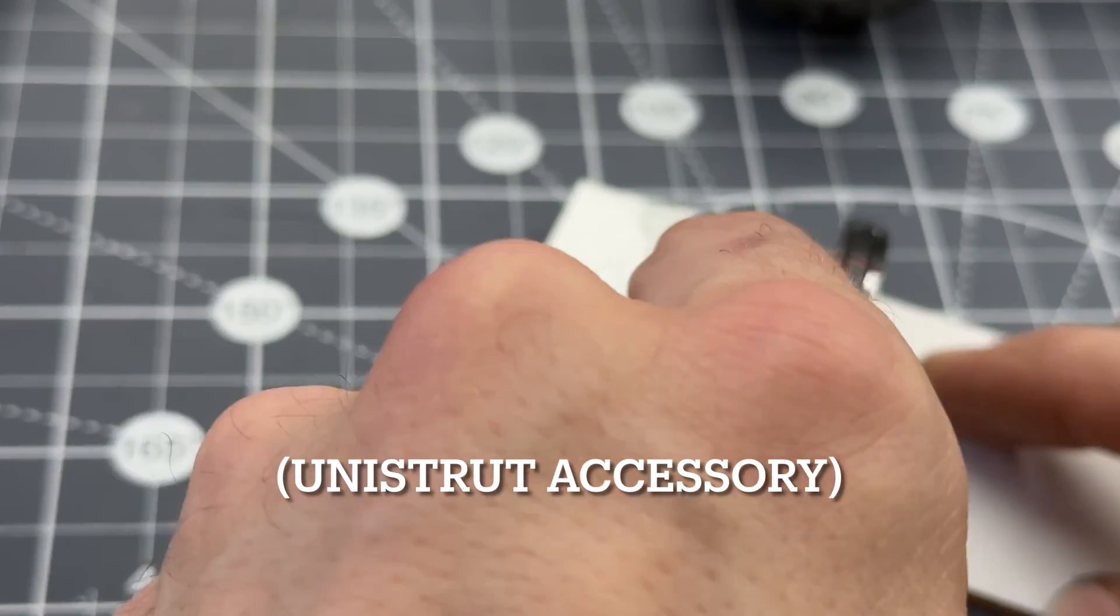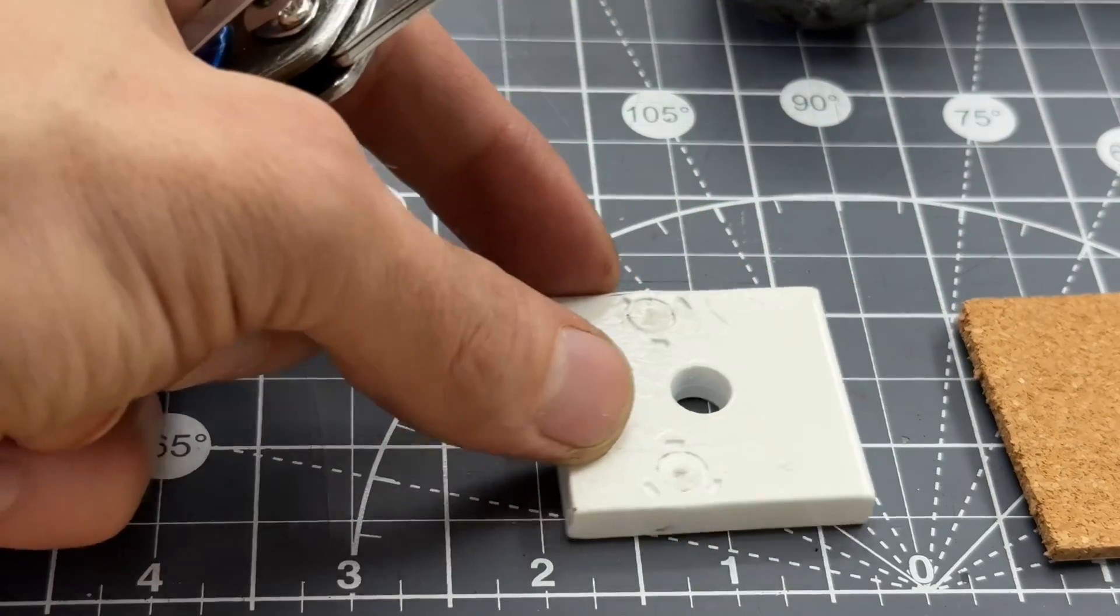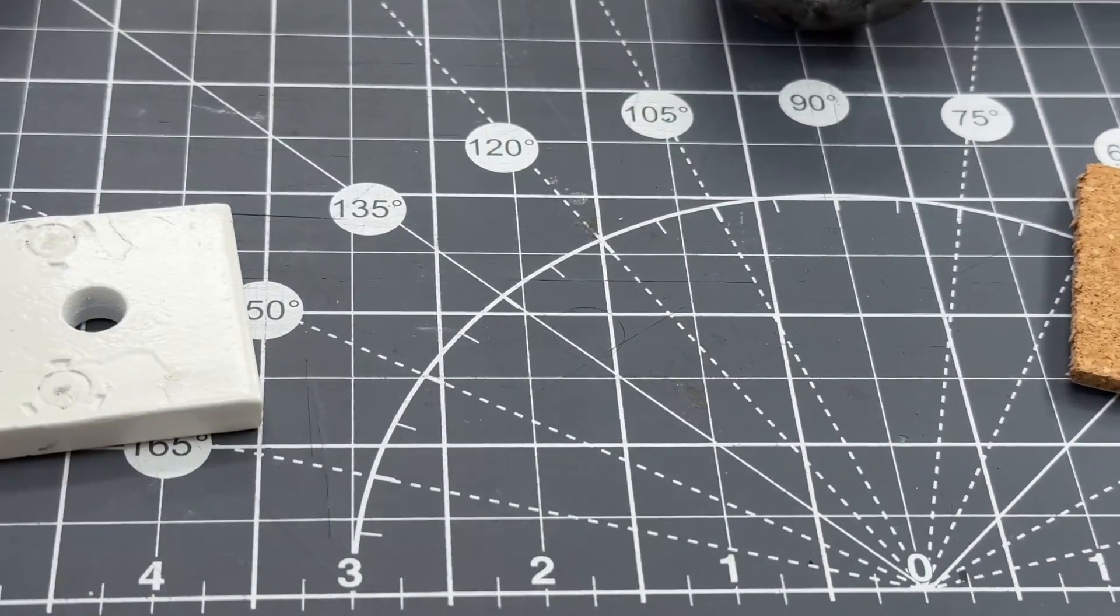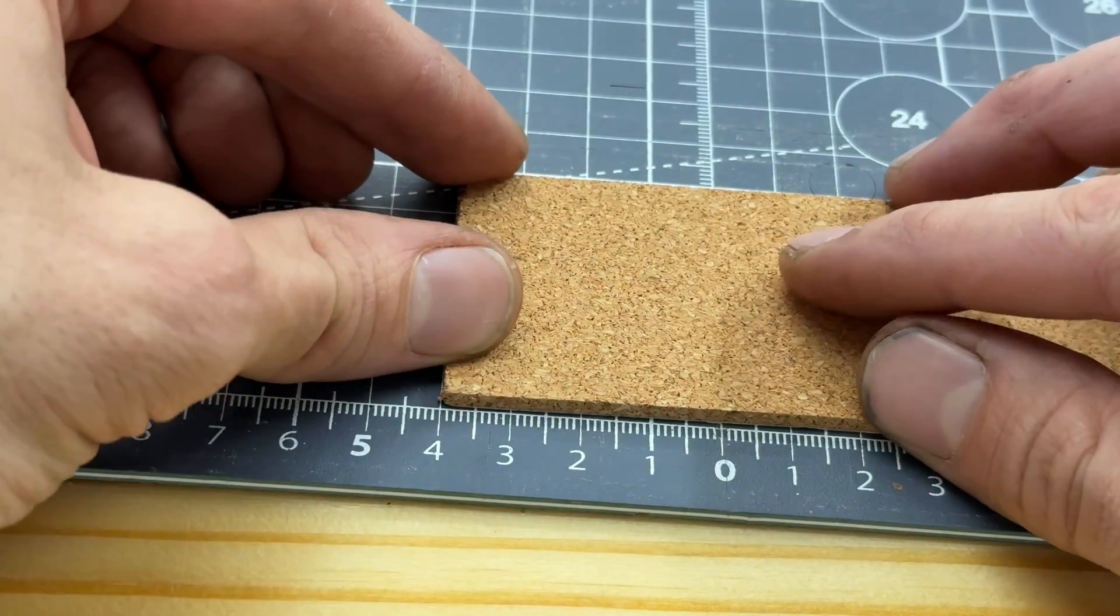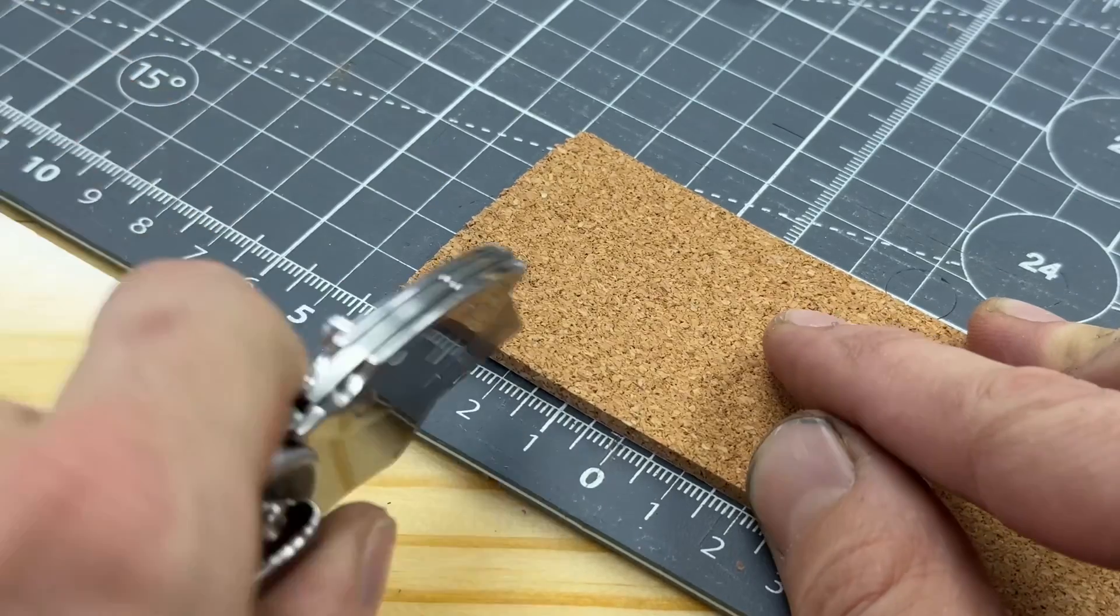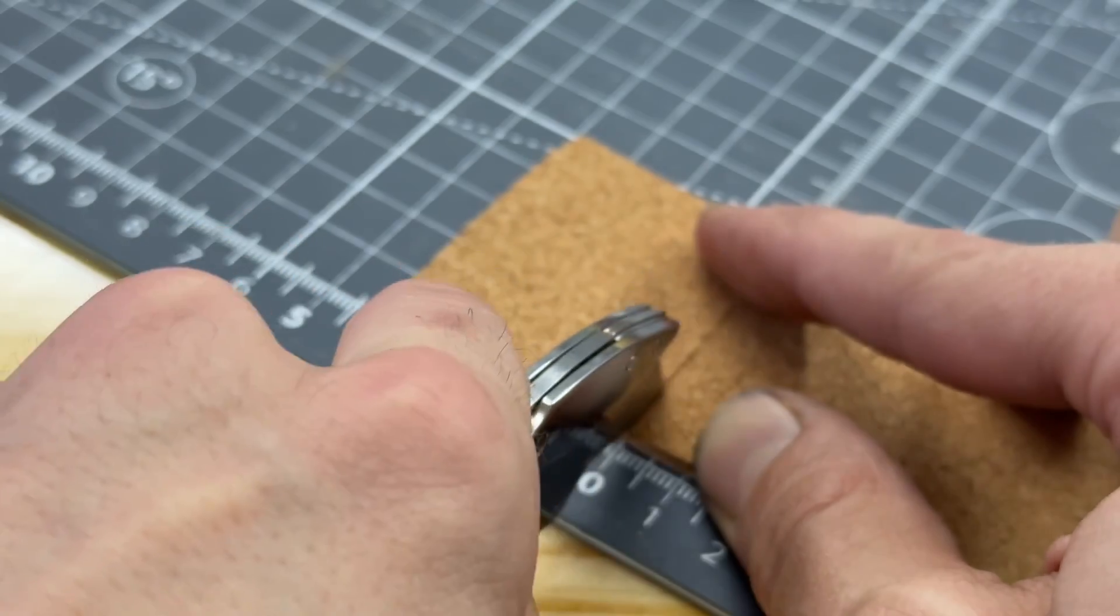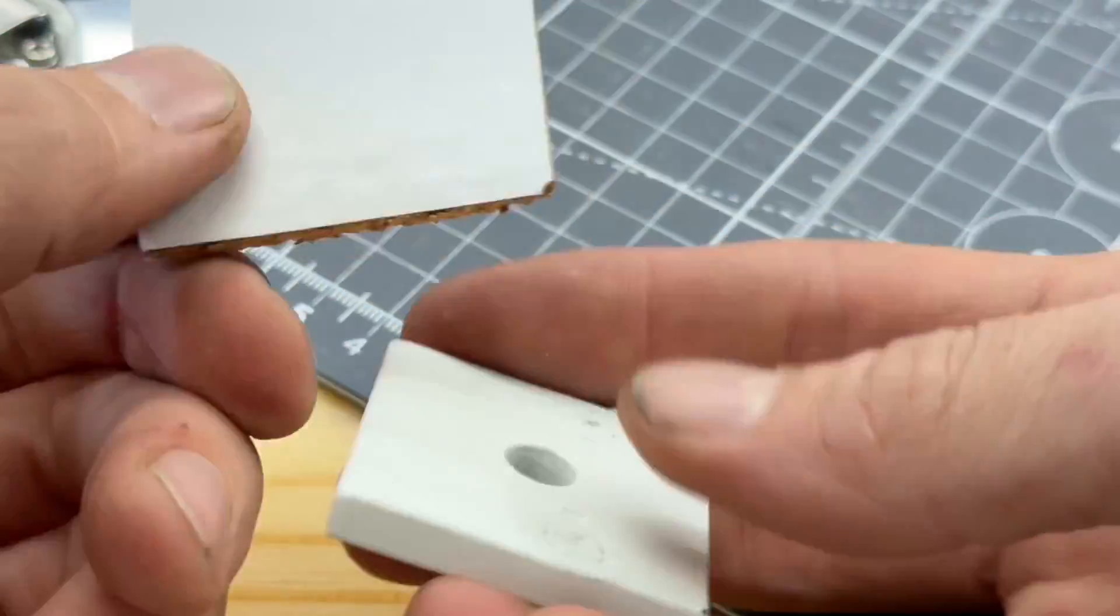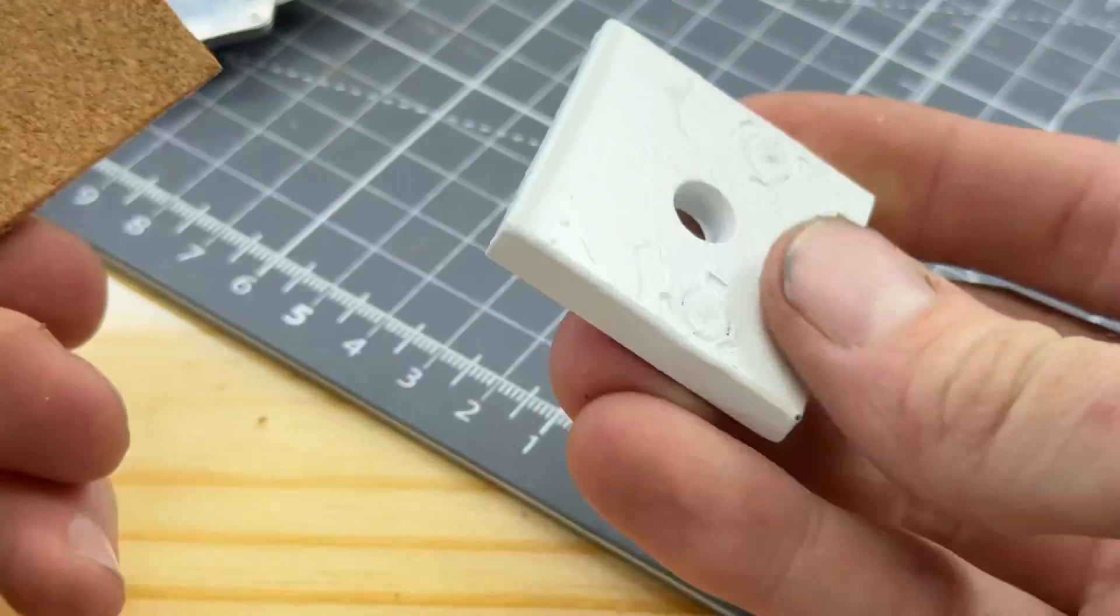Now you're looking at a piece of uni strut and a piece of cork material. We're going to measure that. We need 40 millimeters for the square. That's going to have this here. A simple utility knife will do the job. You want to have this very sharp. And then you're going to get that nice clean edge.